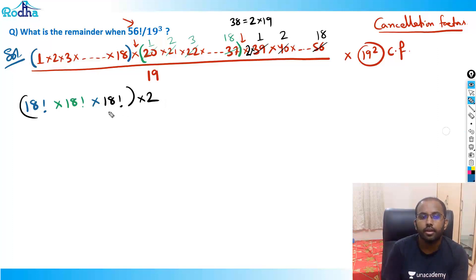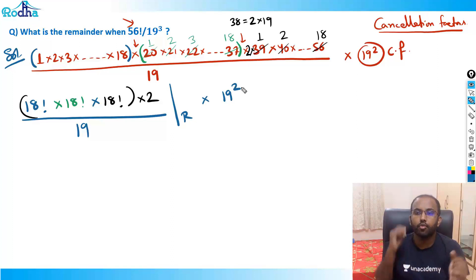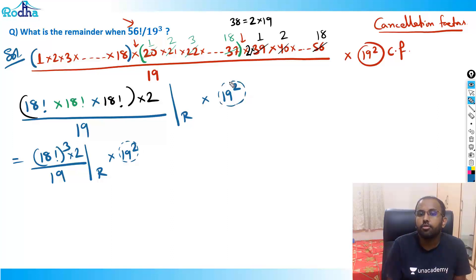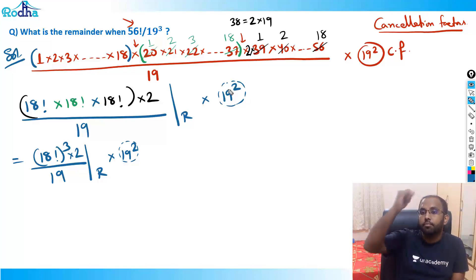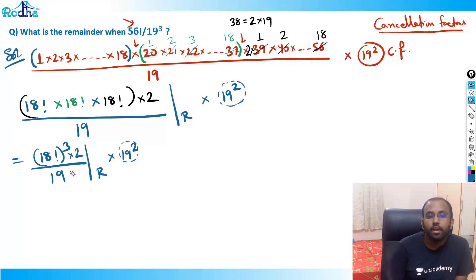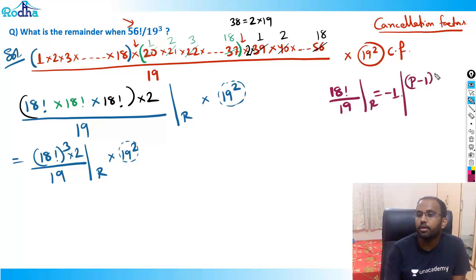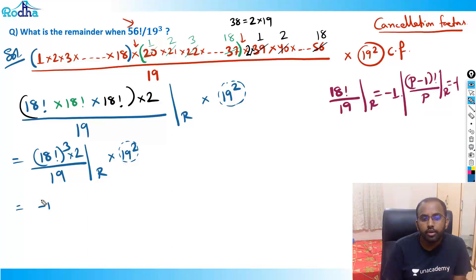So the expression becomes: (18 factorial)³ × 2, divided by 19, multiplied by 19 squared (the cancellation factor). By Wilson's theorem, for any prime p, (p−1)! divided by p gives remainder −1. Here p = 19, so 18! mod 19 = −1. Therefore (18!)³ mod 19 = (−1)³ = −1.